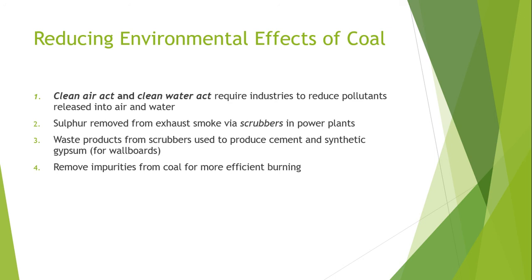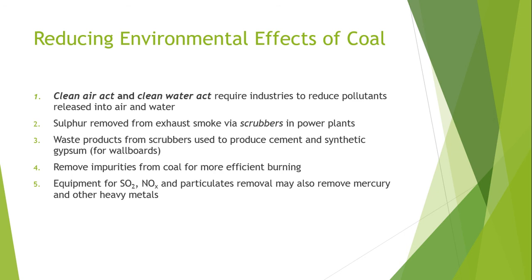Another method for reducing the environmental effects of coal is to remove the impurities that naturally exist in coal. Removing impurities increases the carbon content of the coal to be burned and therefore increases burning efficiency. The equipment used in this process is also capable of eliminating oxides of nitrogen and sulfur dioxide, as well as removing particulates that include vapors of mercury and other heavy metals being released by industrial sources into the environment.